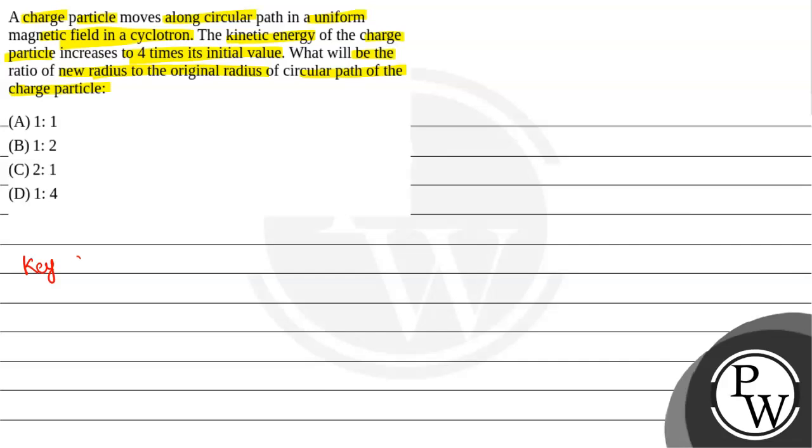Let's see the key concept that we will use here to solve this question. This charge particle is in a cyclotron in a magnetic field in a circular motion. Here we can write radius of particle moving in circular orbit in cyclotron is given by r equal to square root of 2 times mass of the particle multiplied by kinetic energy of the particle, whole divided by charge of the particle and multiplied by magnetic field.